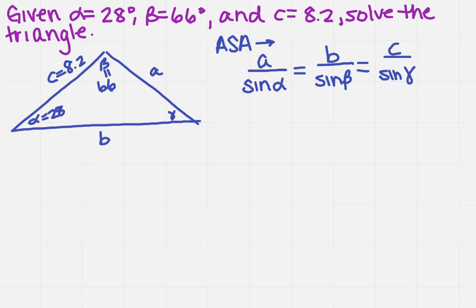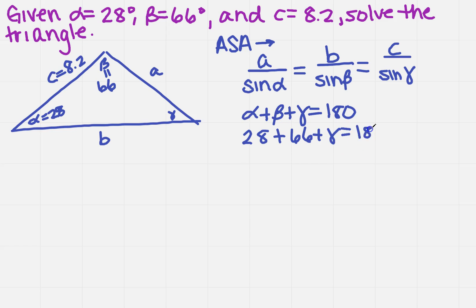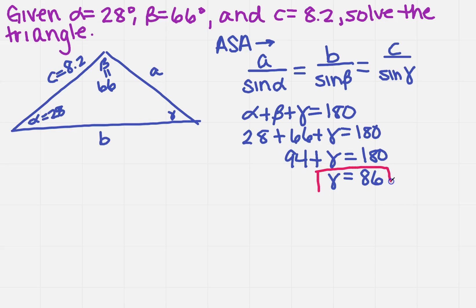From this formula, I know that alpha plus beta plus gamma equals 180 degrees, because the interior angles of a triangle add up to 180. So I can find gamma: 28 plus 66 plus gamma equals 180, giving 94 plus gamma equals 180, so gamma equals 86 degrees. I'll mark that in pink so we don't lose it.